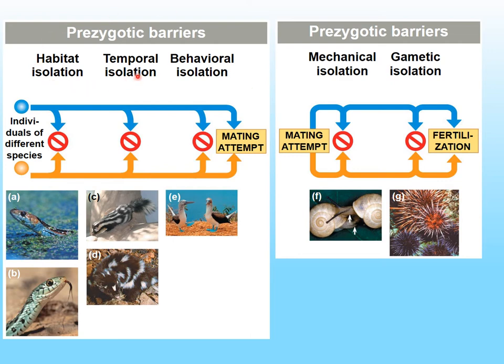Habitat isolation, temporal isolation, and behavioral isolation are conditions that lead to prevention of the mating attempt. This could be at the level of the whole species or population — maybe the populations don't even interact with each other; they never come across each other. Mechanical isolation and gametic isolation occur when mating has happened, but these two block the fusion of egg and sperm.